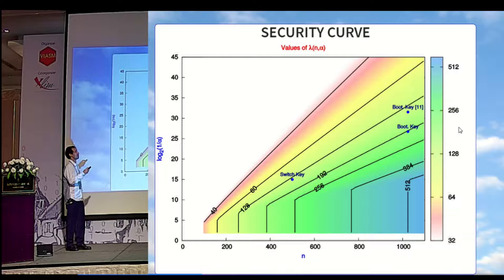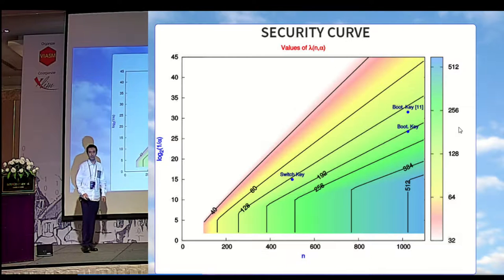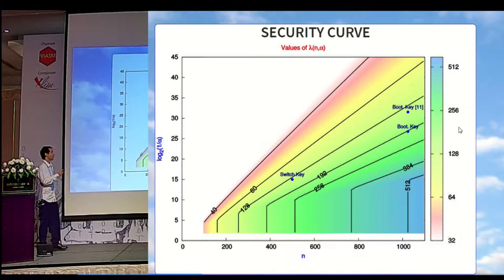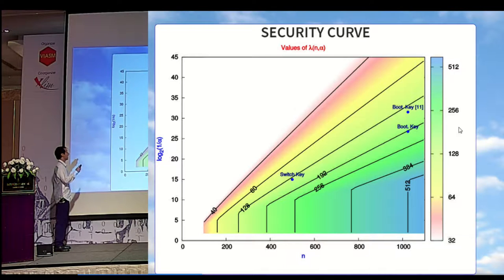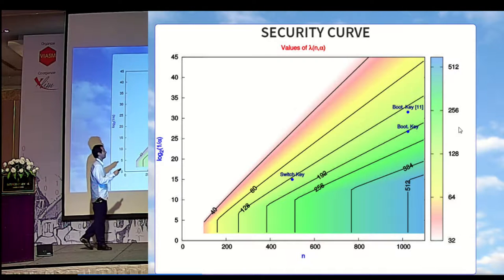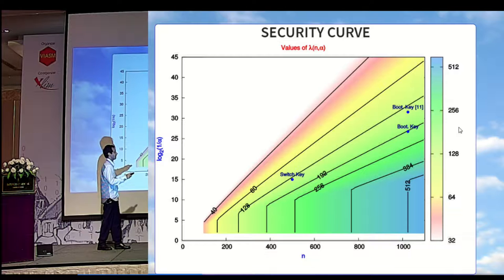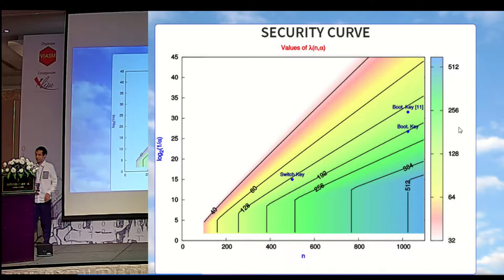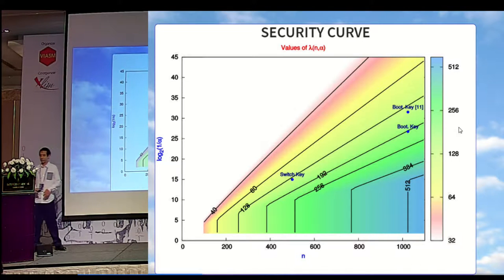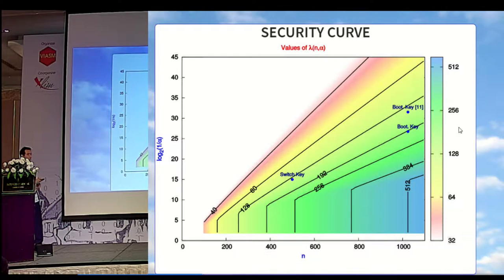The security parameter would be a function of our two parameters n and alpha. This is the function given directly by cryptanalysis. How do you read the graph? You first convert the number of homomorphic operations you will perform into noise overhead. Say your noise overhead is 2^30 — you follow the horizontal line until it crosses your desired security level, and it gives you your minimal key size. Estimating lattice parameters will never be as easy. The scatter points correspond to samples that appear in our fully homomorphic proposal, and you can see that they are all above 128 bits of security.